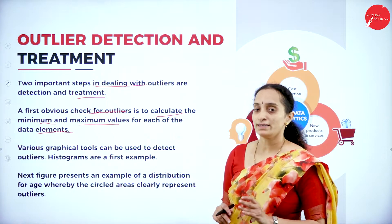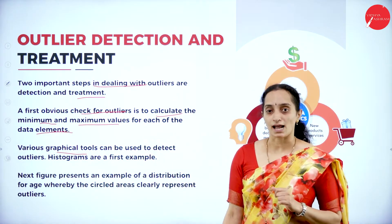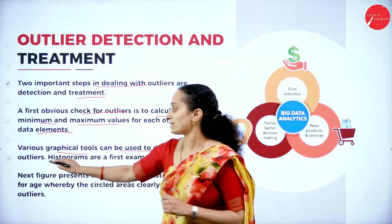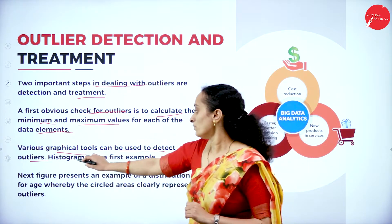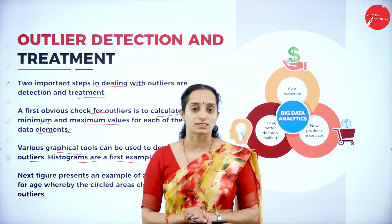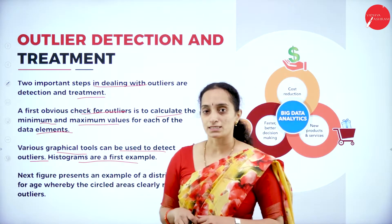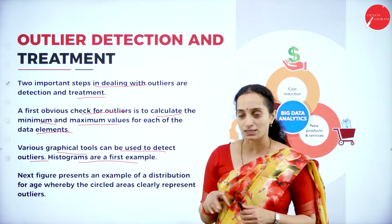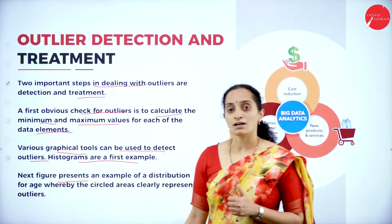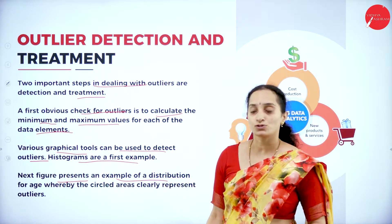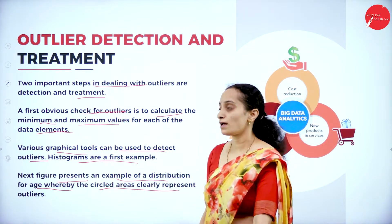We also use various graphical tools to detect outliers before treating them. The first example of a graphical tool is histograms — in simple words, bar charts — which give you an idea of outliers. Here we'll look at a figure showing a distribution for age, where the circled areas represent the outliers.